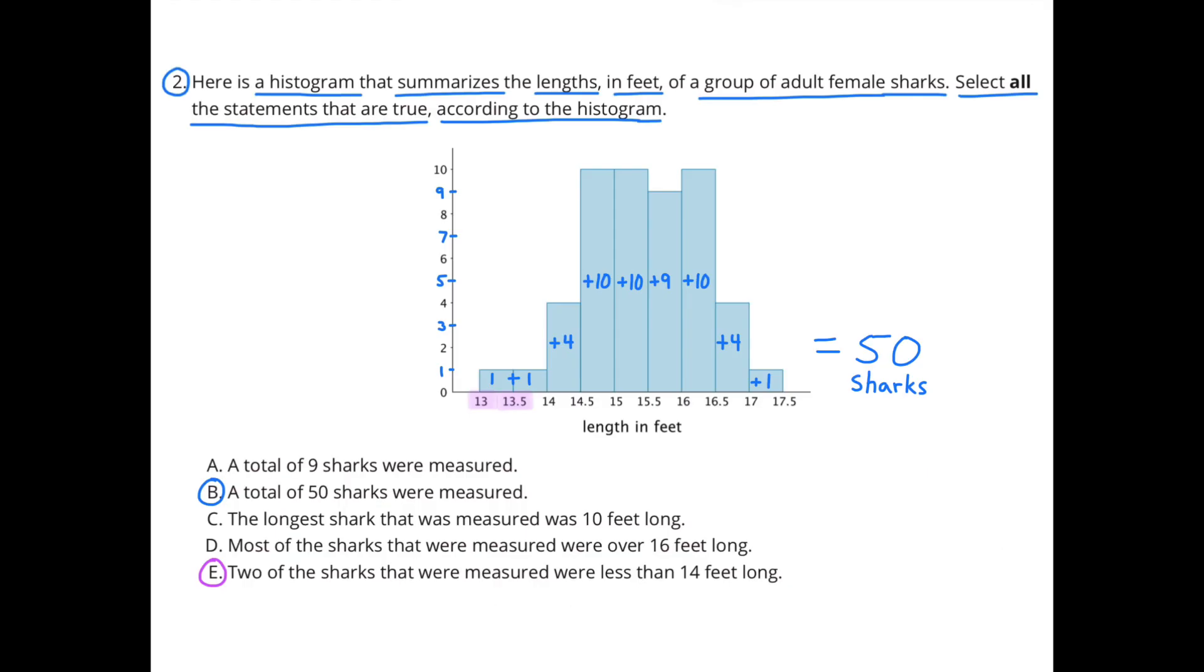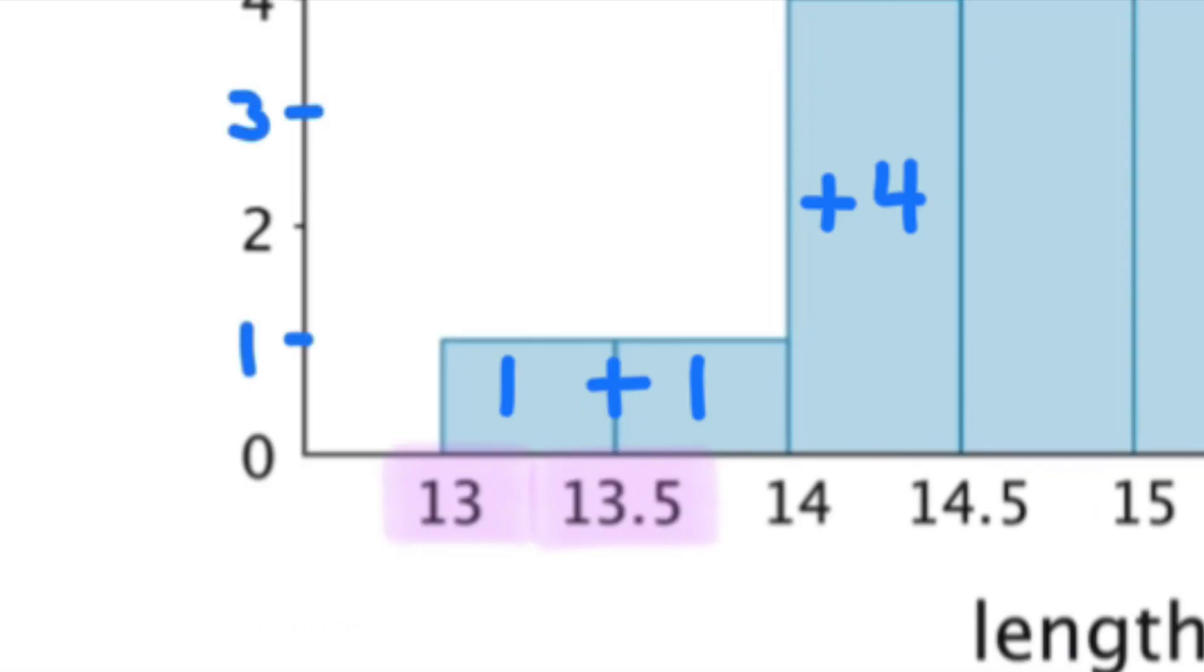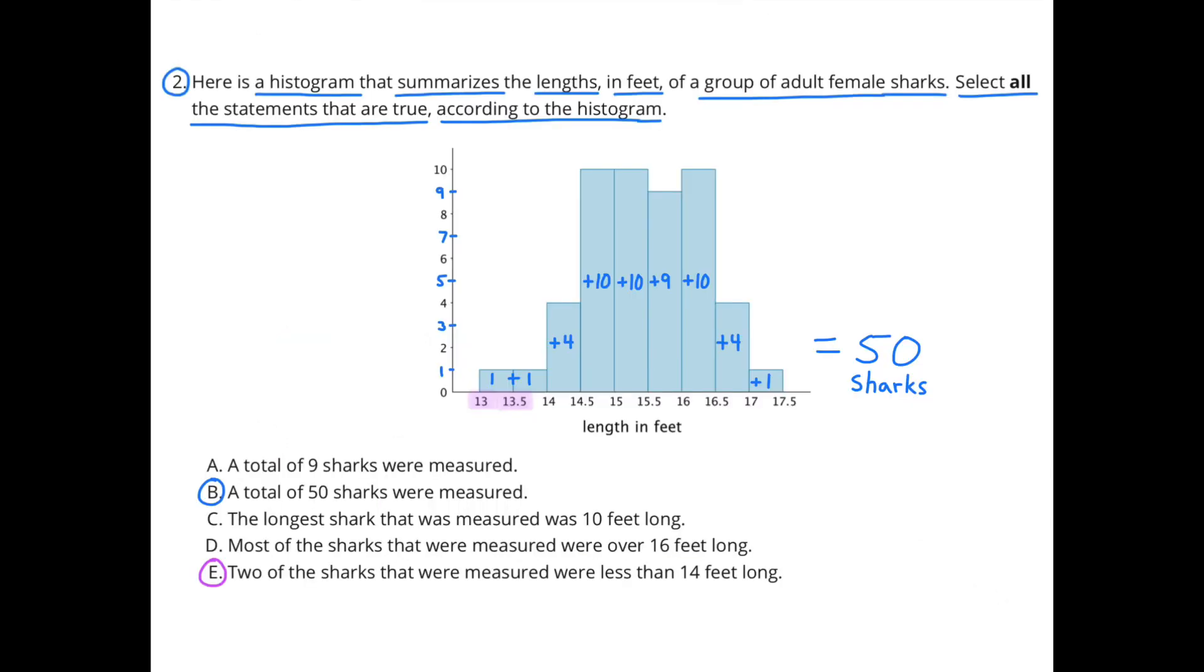And E, two of the sharks that were measured were less than 14 feet long. I highlighted in pink the two sharks that were measured that were less than 14 feet long. A, C, and D are not true according to the data in the histogram.